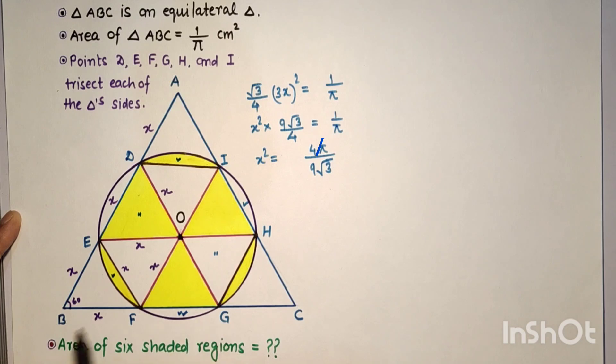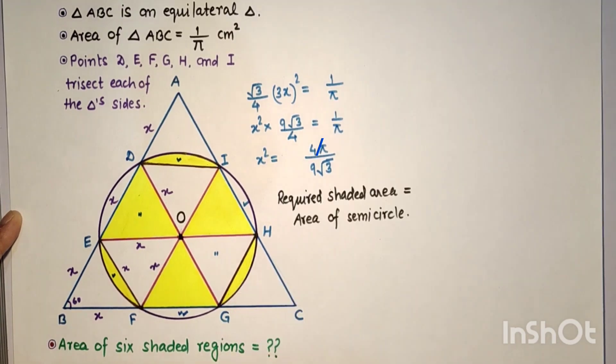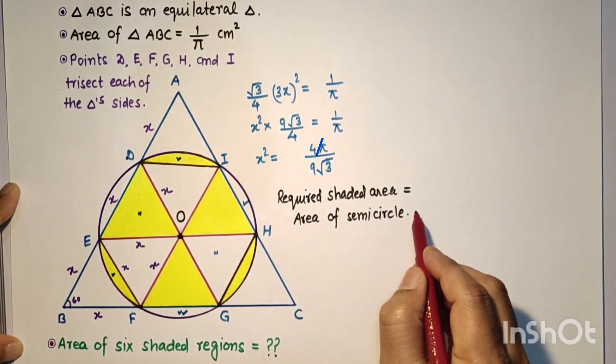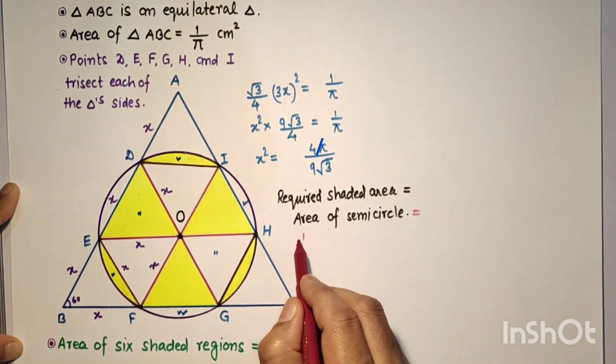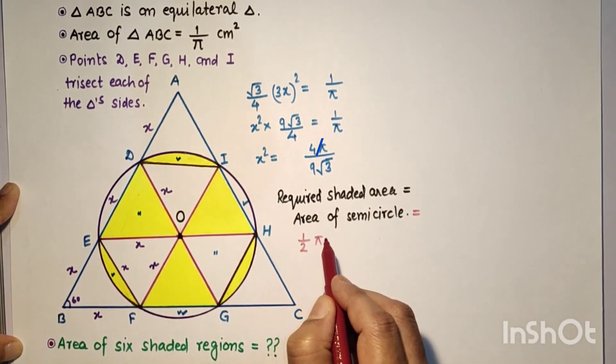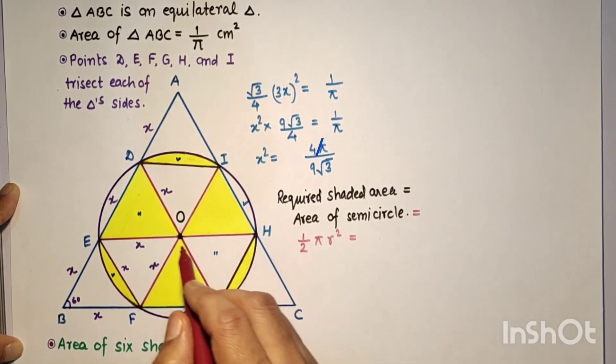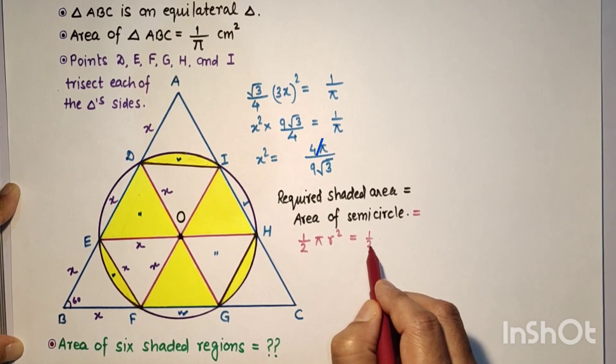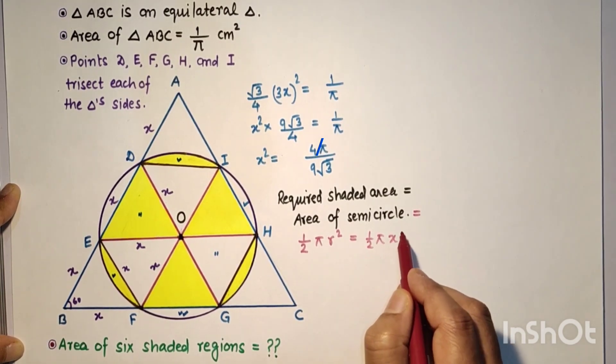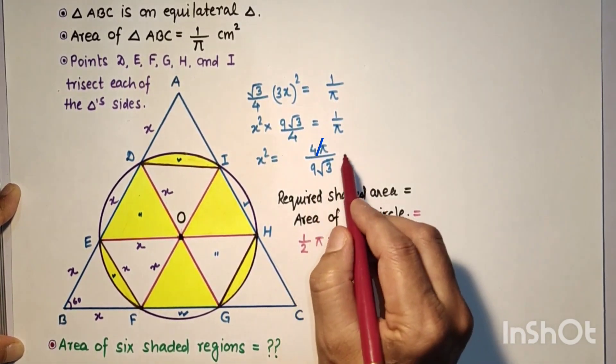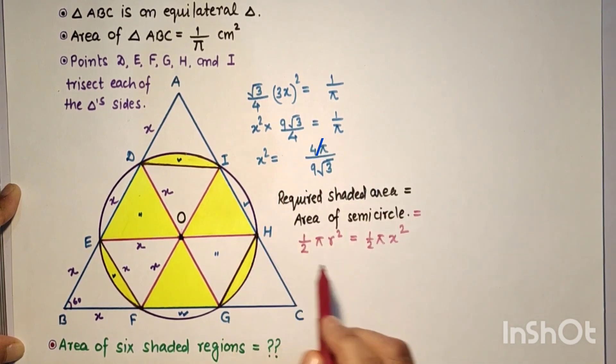The required shaded region's area will be the area of the semicircle, which equals (1/2)πR². Here R is X, so (1/2)πX². Now substitute the value of X².